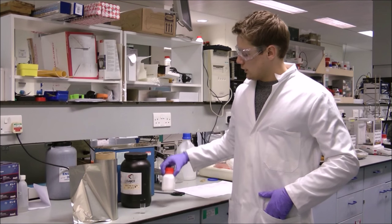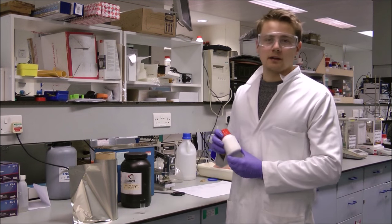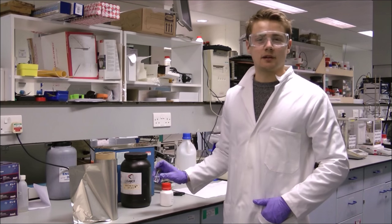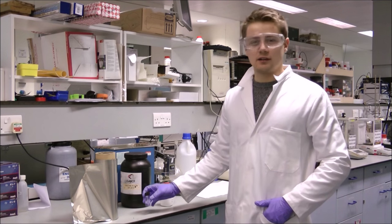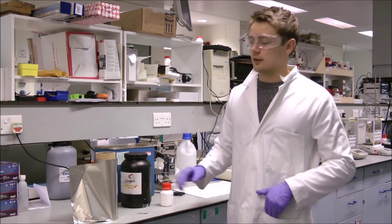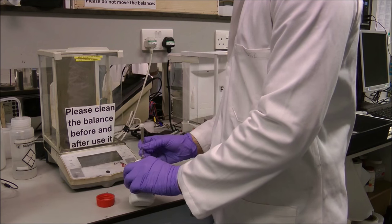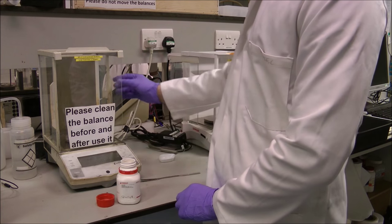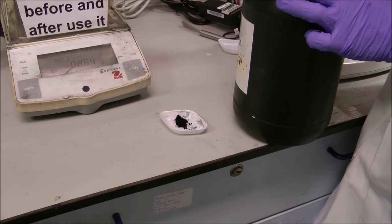To do this we mix a polymeric binder, which is PVDF, with the carbon black in an NMP solvent. This creates an ink which can be deposited as a thin film onto the current collector foil. The materials are weighed, firstly with the PVDF binder, then secondly the carbon black.